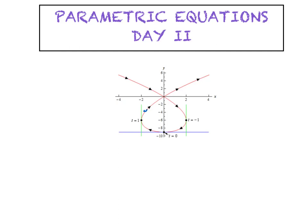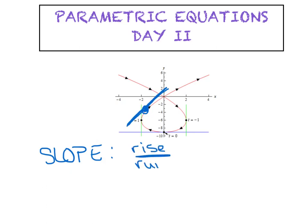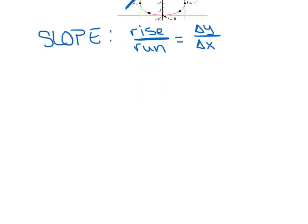Before we can do that, I want to talk about a very basic tangent line — a generic one — and how we're going to find the slope at any specific point. Finding slope will be a similar discussion to what we had with polars. The only way to measure slope is the ratio of rise to run. dx/dt by itself only measures the rate at which the horizontal position is changing.